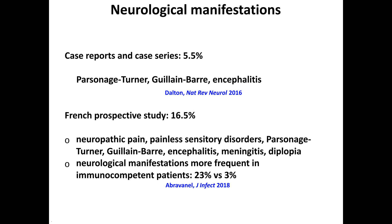There are also neurologic manifestations associated with this virus. Retrospectively, the frequency was first estimated at 5.5%, with the main neurologic syndromes being Parsonage-Turner, Guillain-Barré, and encephalitis. In a French prospective study performed by Florence, the frequency was higher at 16.5%, and included also neuropathic pain and painless sensory disorders. Notably, neurologic manifestations were more frequent in immunocompetent patients compared to immunocompromised patients, suggesting that immunologic mechanisms are involved in pathogenicity.